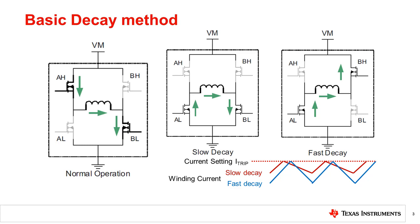This method forces the recirculation current to decay at a faster rate compared to the slow decay mode. Fast decay results in large current ripple amplitude.